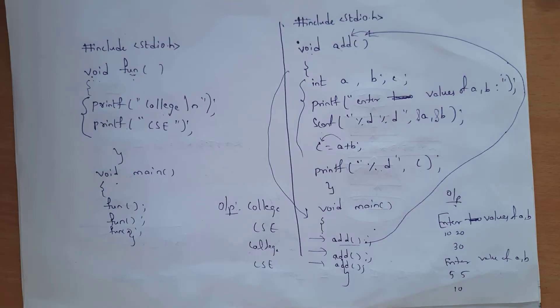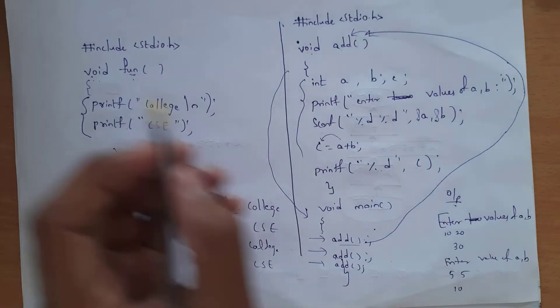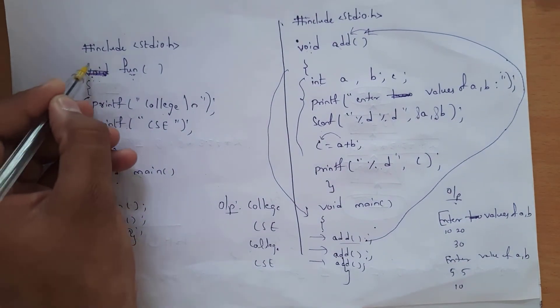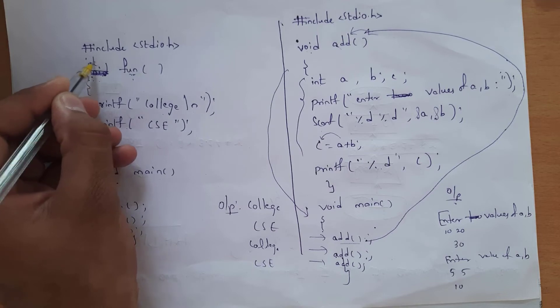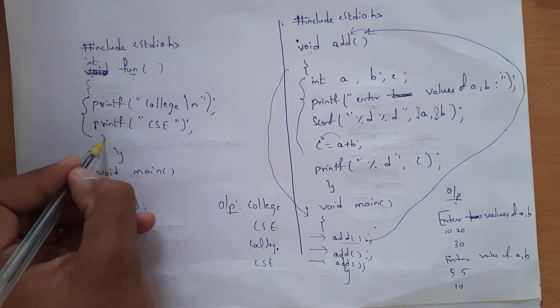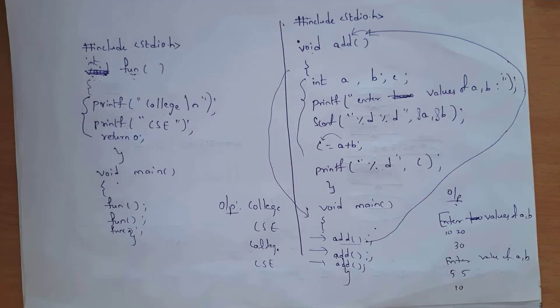If you want to use a return type for a function, replace void with int and write return 0 inside the function. This is the return type of a function.